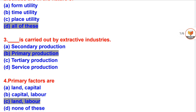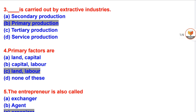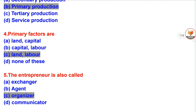Question 3: Which is carried out by extractive industries? A. Secondary production. B. Primary production. C. Tertiary production. D. Service production.